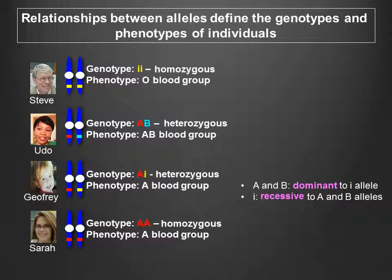An allele like the A allele, whose phenotype is expressed with just one copy of the allele, is a dominant allele. In contrast, an allele whose phenotype is masked when present as a single copy in a heterozygous individual is a recessive allele. Therefore, recessive alleles like the I allele only manifest their phenotypes when present in two copies in homozygous individuals.